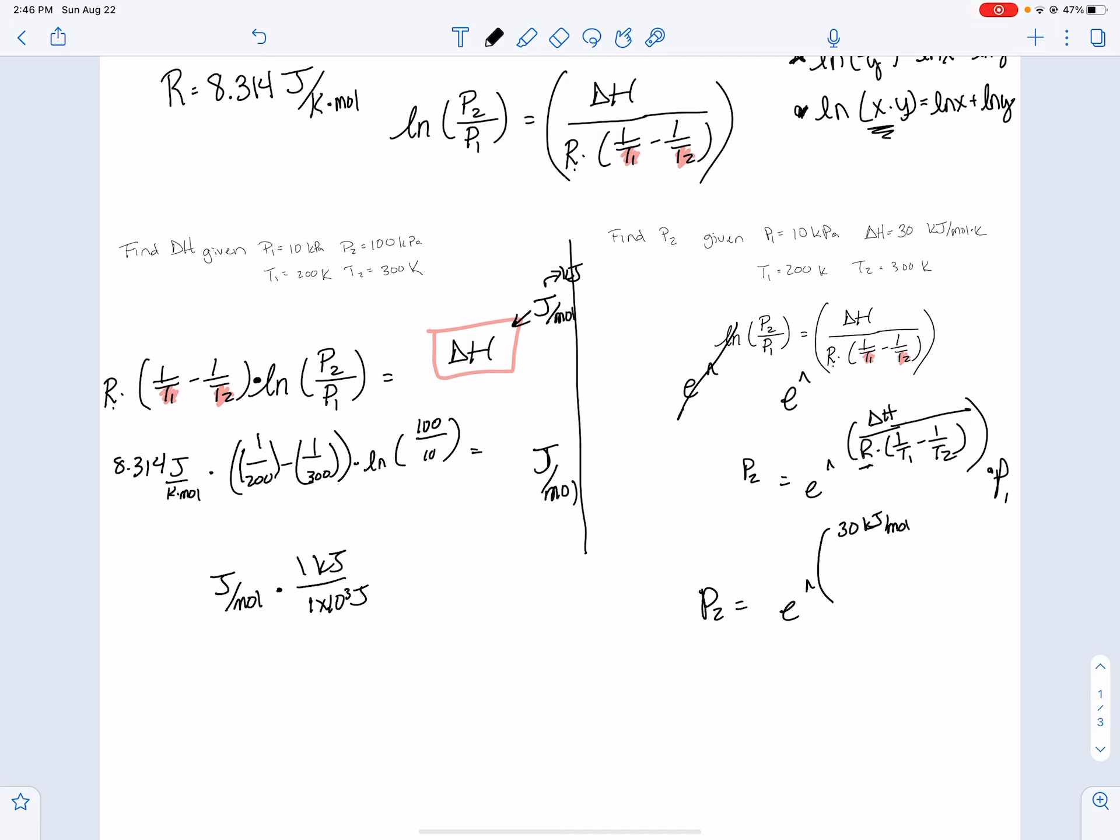Now look, I'm about to have to divide it by 8.314 joules per mole. So I'm going to go ahead and make that 30 kilojoules a joule unit. But if you like going the other way, it's totally fine.